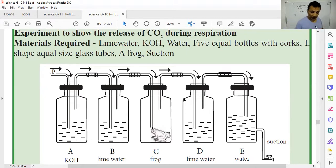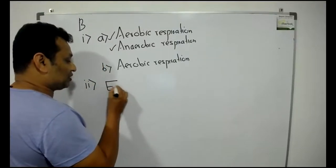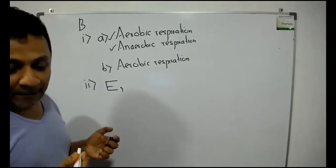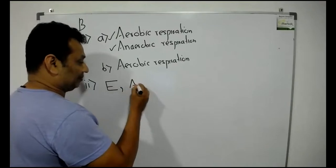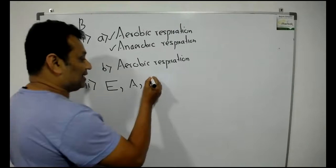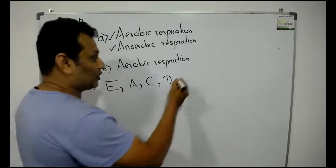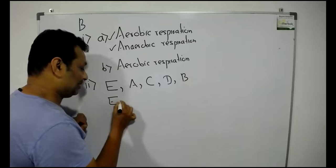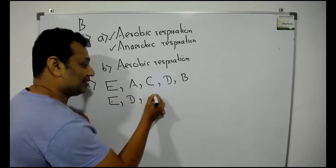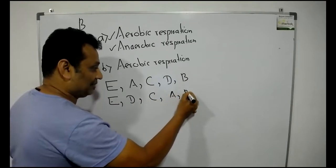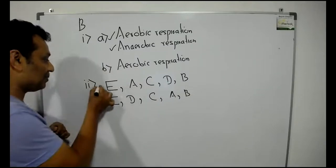After putting the relevant solution into the bottle A, write down the correct sequence in which the above bottles should be fixed. Confirmly, E should be fixed in the beginning. E is the first one, potassium hydroxide. After that one, lime water should come, you can fix A there. After A, you have to put the green gram seeds. Again you have to put D. In the last, the tap water B. Otherwise, E, D should come here, C, A, B. No problem. Both are right.